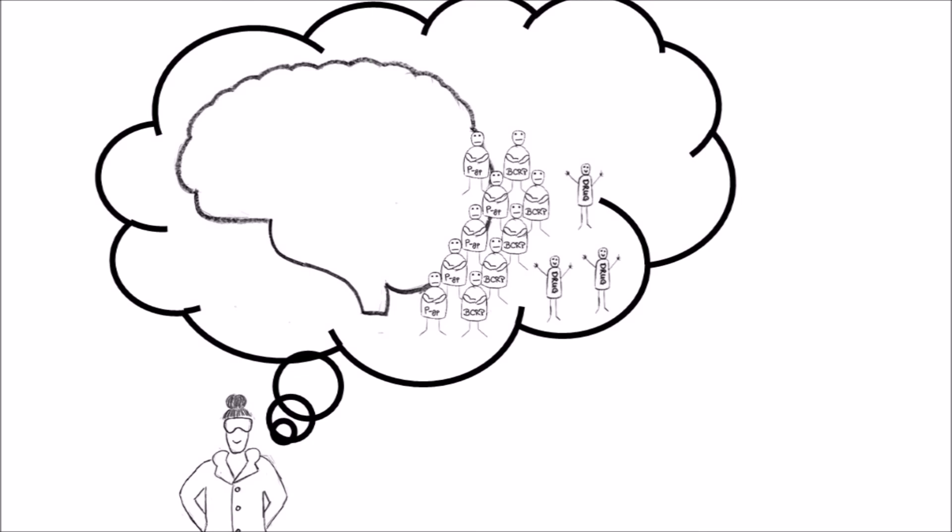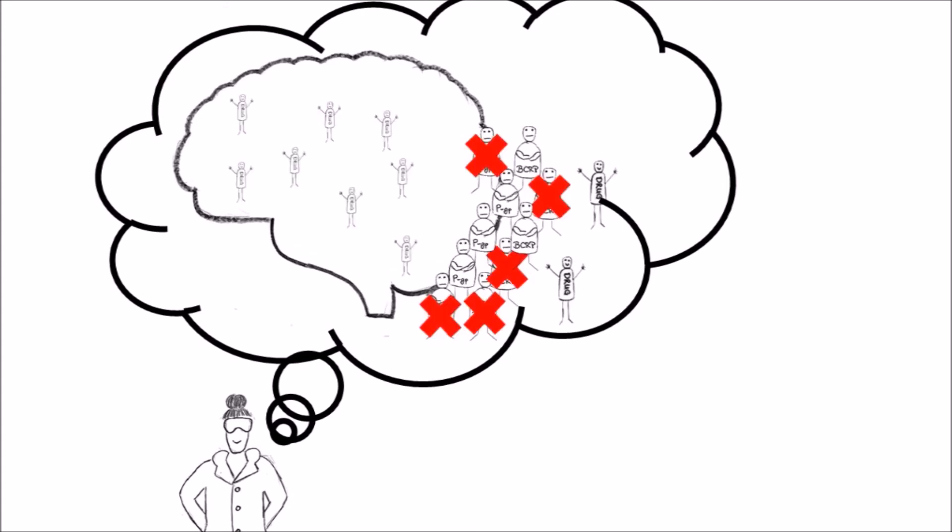In some diseases, the number of efflux transporters goes up, so even less of the medication can get into the brain. Researchers are trying to find ways to inactivate the transporters to make sure the medications can reach their targets.